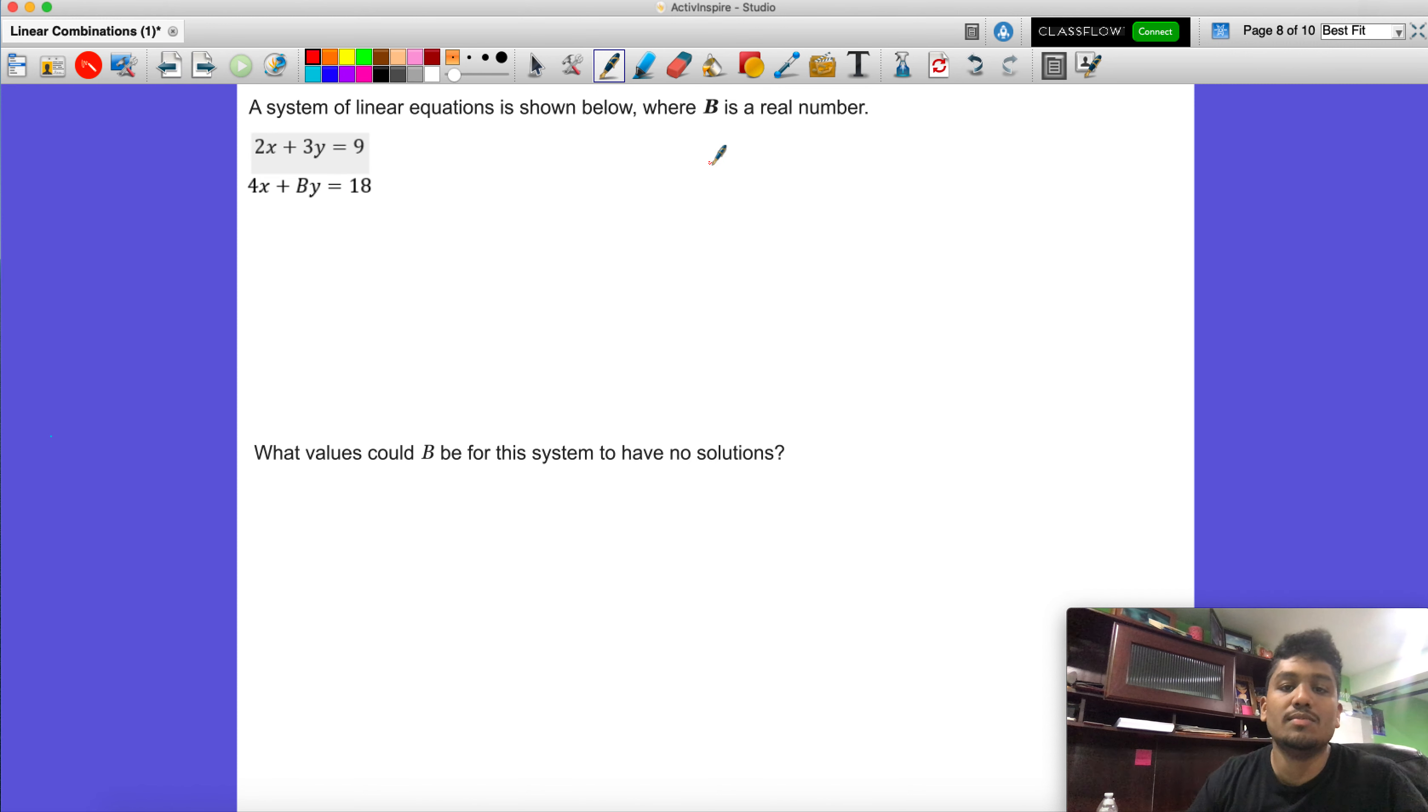A system of linear equations is shown below where B is a real number. If you notice here, we have two equations. Each of them have two variables, but what you'll notice on the second one is that there is no number for B. That's something that we have to find. And the question is, what values could B be for this system to have no solutions?